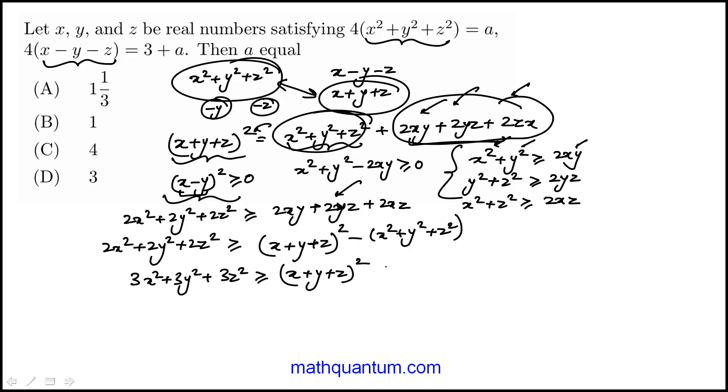You'll notice here that if I replace y with minus y and z with minus z, then this will become, because these are squares, they remain that way because you're squaring minus y. Whereas this side will become x minus y minus z. And this is kind of what the pieces we have. So next I'm going to do is to substitute those here.